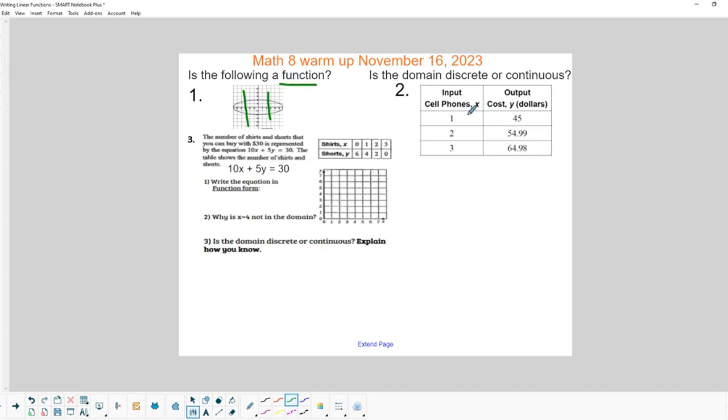Okay, over here, if we look at the example, is the domain discrete or continuous? And in this case, it's phone calls by the number. So each phone call costs a certain amount. And as long as it costs a specific amount, then it would be considered discrete.